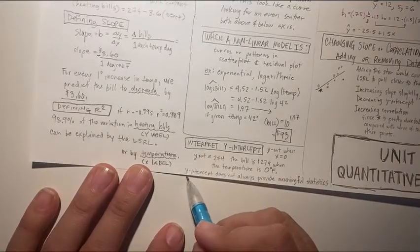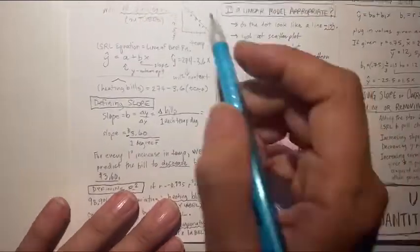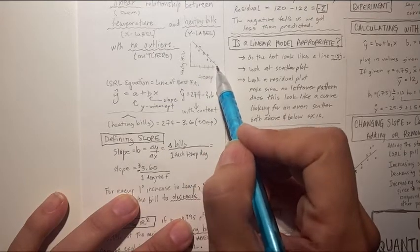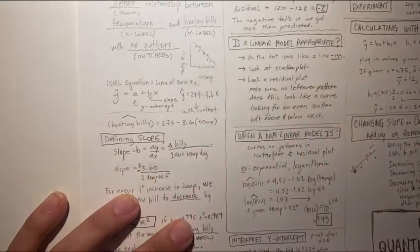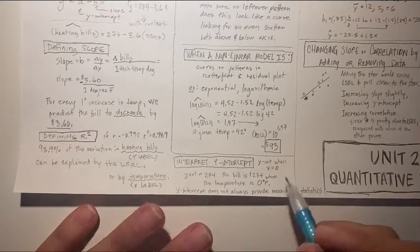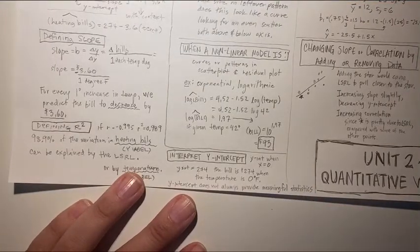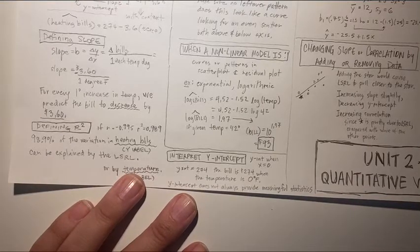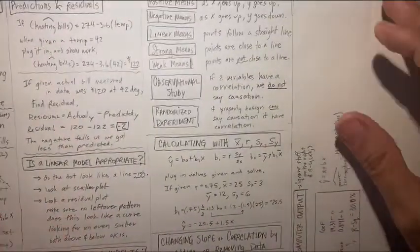One last thing I wanted to note about intercepts is they don't always provide meaningful statistics. So here, if all of these data points were collected between 50 and 100 degrees, then zero is outside of the domain of your numbers. And so oftentimes they'll ask, what is the intercept? What does it mean in the problem? And does it provide meaningful statistics? And sometimes it doesn't, which is okay if it's outside the domain of the numbers.